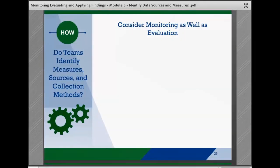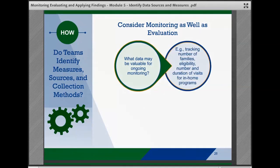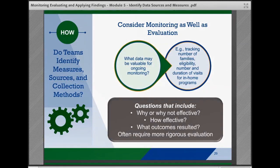As teams are developing their measurement framework, they should also consider what data may be valuable for ongoing monitoring of programs and interventions. For example, in a home visiting program, routine monitoring might include tracking the number of families enrolled, percentage of families eligible enrolled, and number and duration of home visits. This data would be available through a variety of sources such as program records, databases, or case reviews, and might need to be reported in alignment with agency or funding requirements. Exploring more complex questions about why or why not an intervention is effective, how it is effective, and what outcomes resulted generally fall to more rigorous evaluation efforts and typically involve additional data sources and study designs.